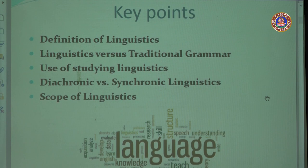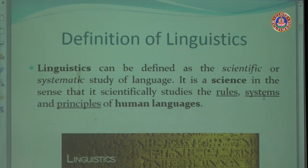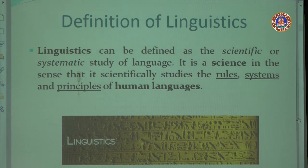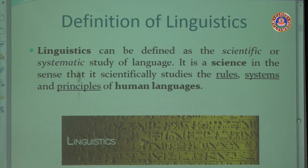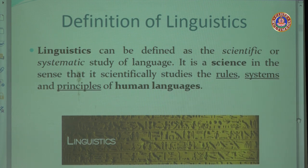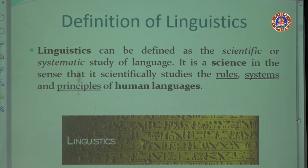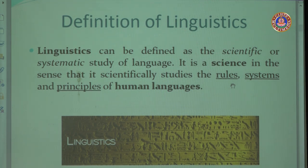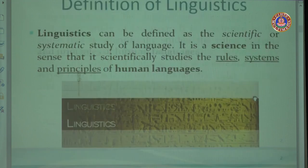From definitions of linguistics, we will now begin to look at how linguists define linguistics. Linguistics can be defined as the scientific or systematic study of language. Linguists believe that every language has a system — in English you are only allowed 44 sounds to speak or write anything you like, but they should be meaningful combinations. It is a science in the sense that it scientifically studies the rules, systems, and principles of human language.